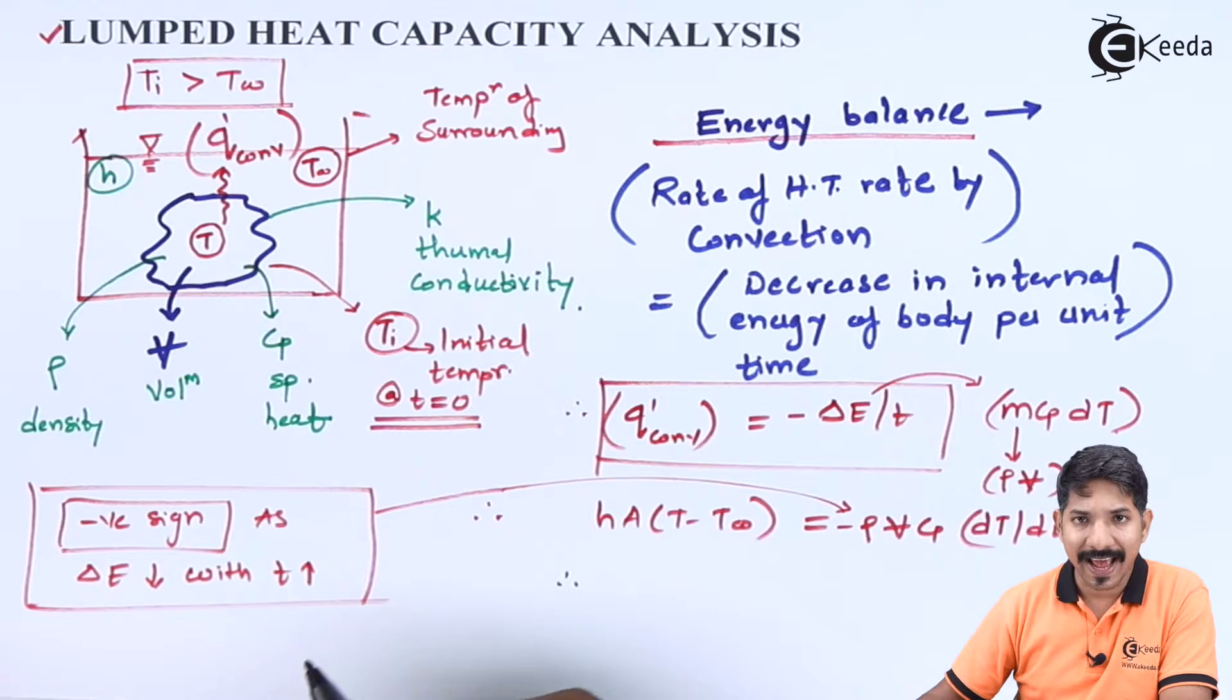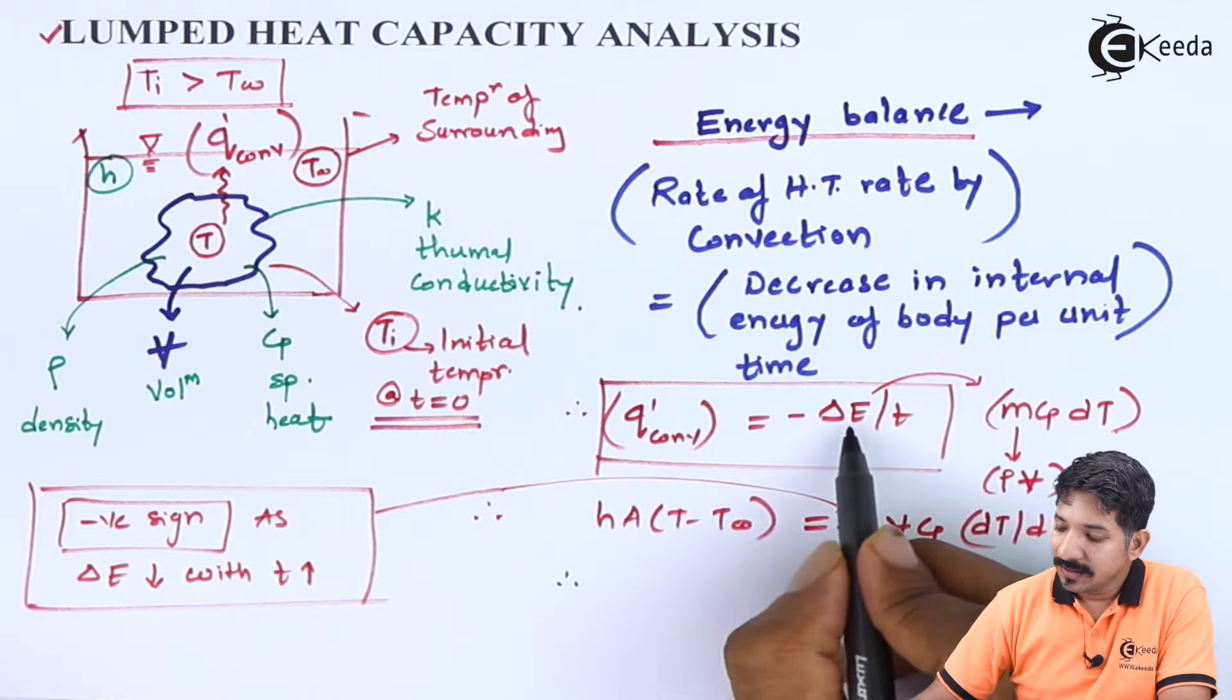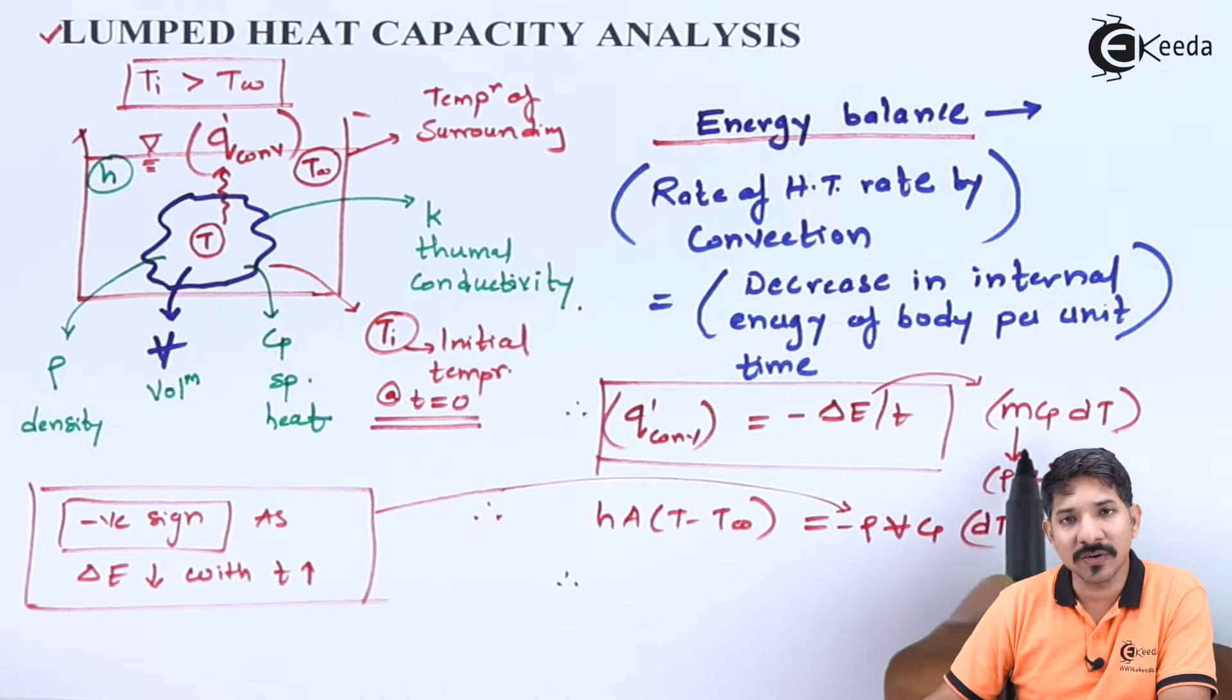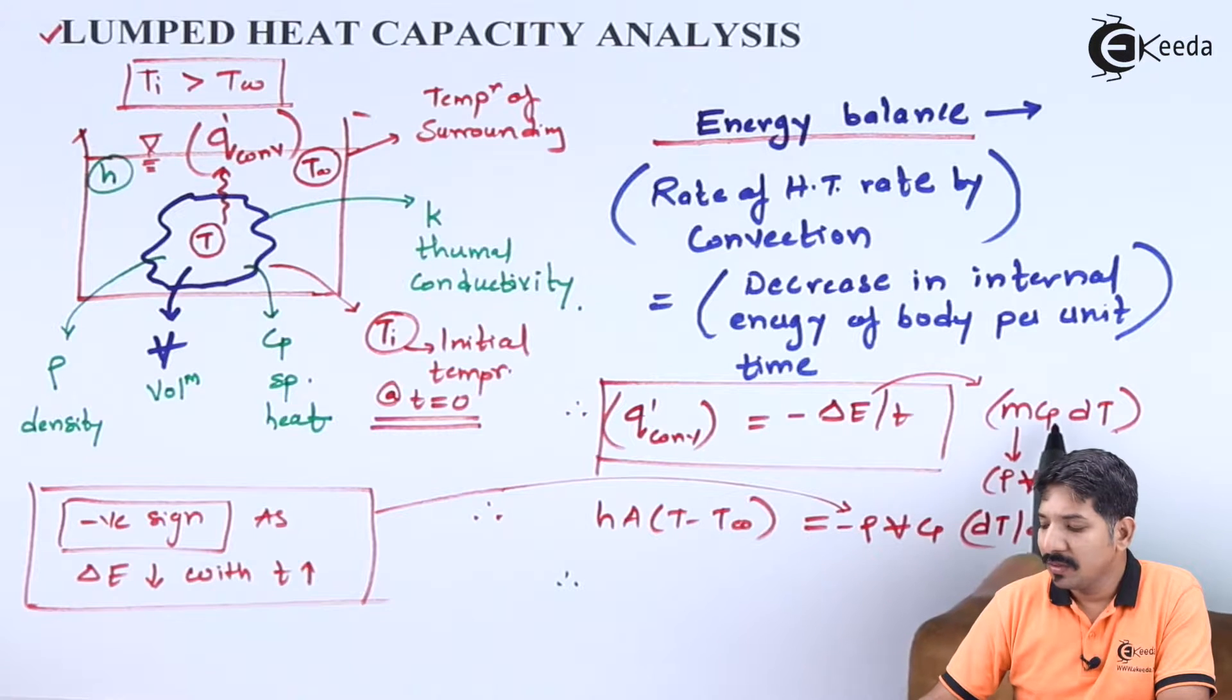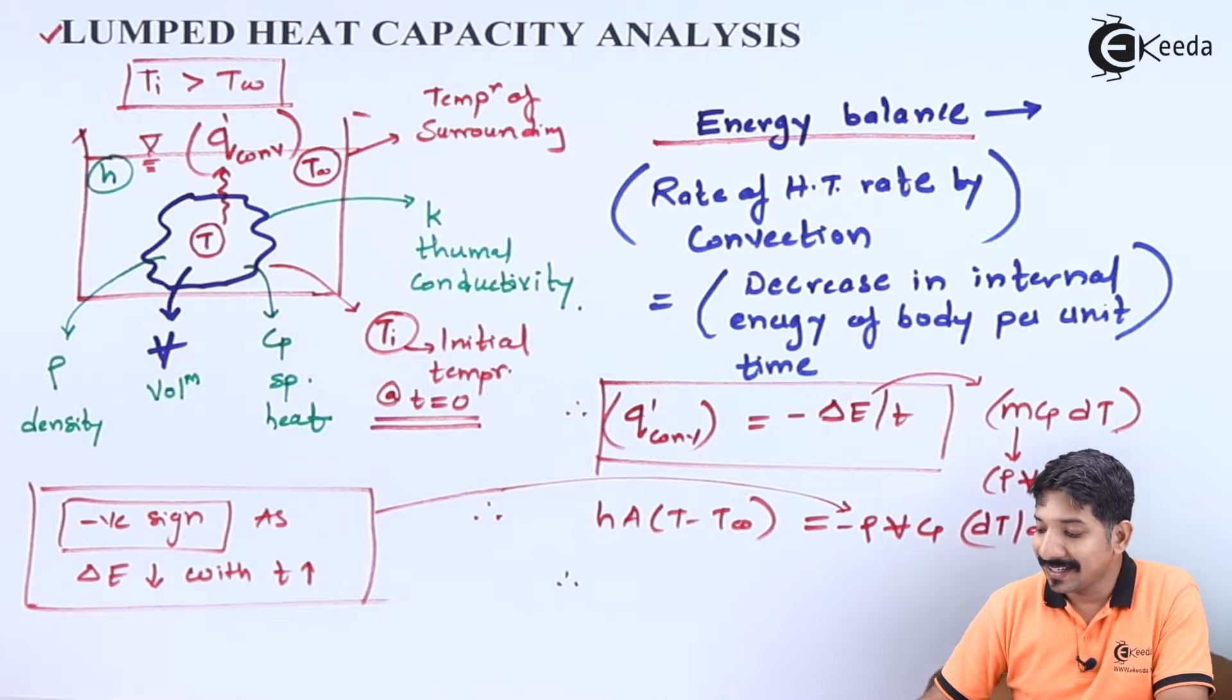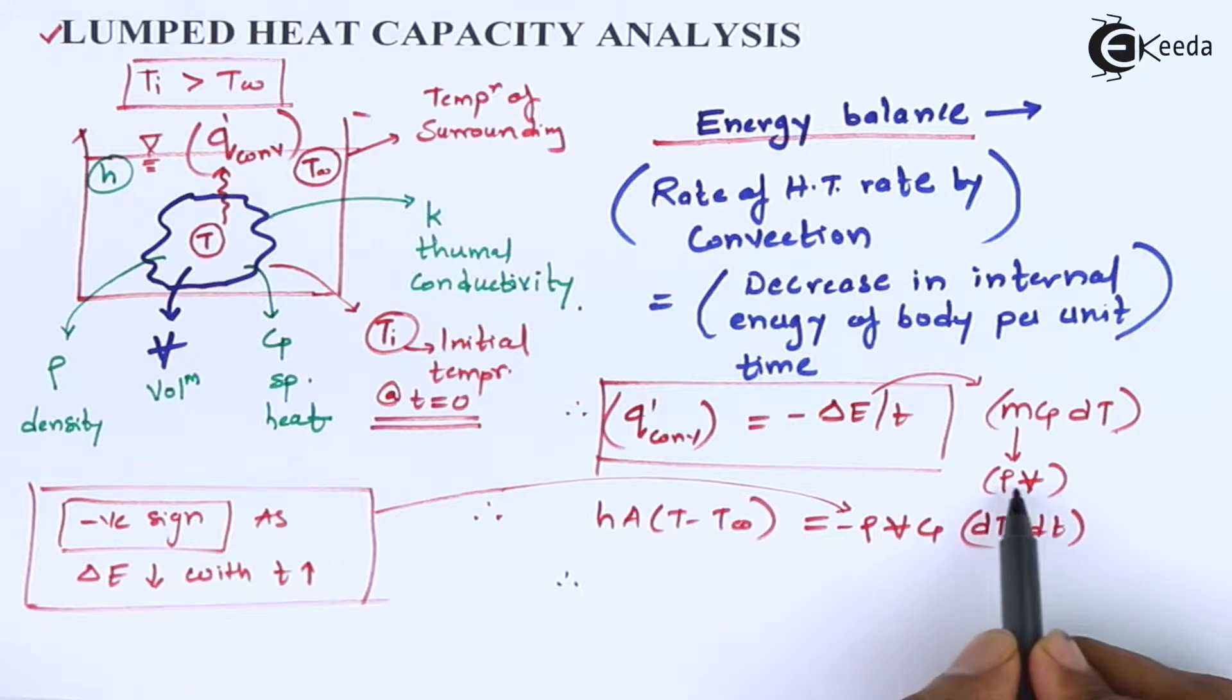As the time increases, as the time passes, the value of delta E will keep on decreasing only. Now this delta E, as we have seen in thermodynamics, is given as MCP delta T. Now here I have assumed that my process is at constant pressure. It's not necessary that the process should be constant pressure, it can be a constant volume process. So you can simply write this as MC itself, but for simplicity and for better understanding I have written this as MCP delta T, where my mass can be expressed as density into volume.